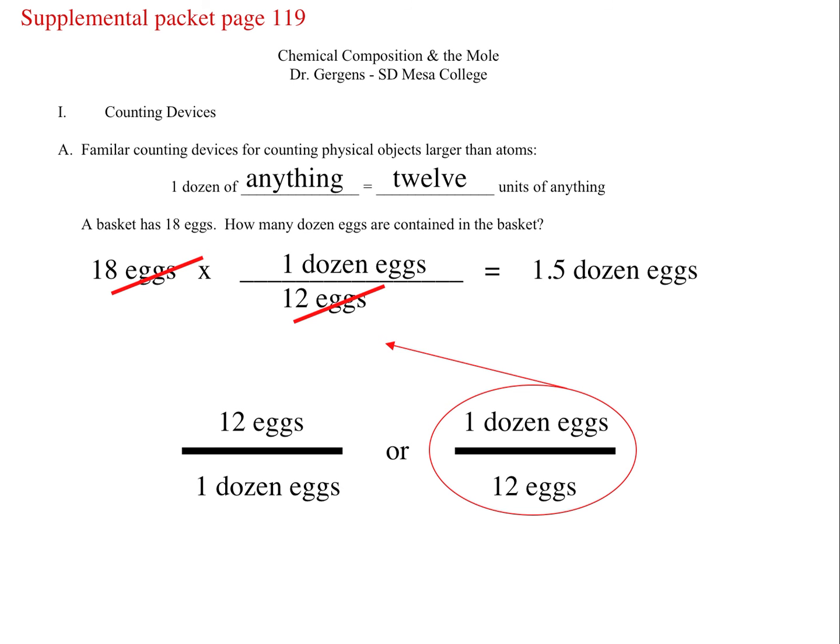Plus 18 eggs times one dozen eggs per 12 eggs is equal to 1.5 dozen eggs. And note that the units eggs cancel out. Now, we could also cross out the units directly above, because anything above itself is equal to 1. Thus eggs cancel with eggs.